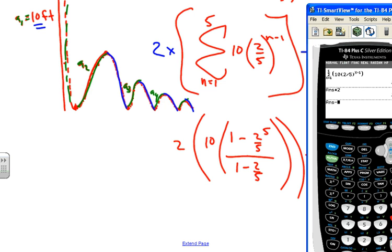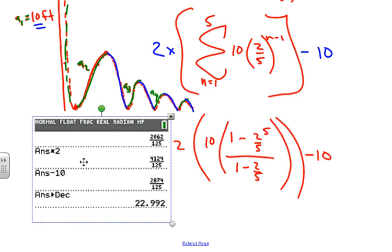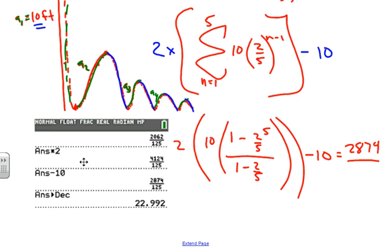Multiply this by two, then subtract 10, and that's our value. Converting to decimal, we get the answer: 2,874 over 125.